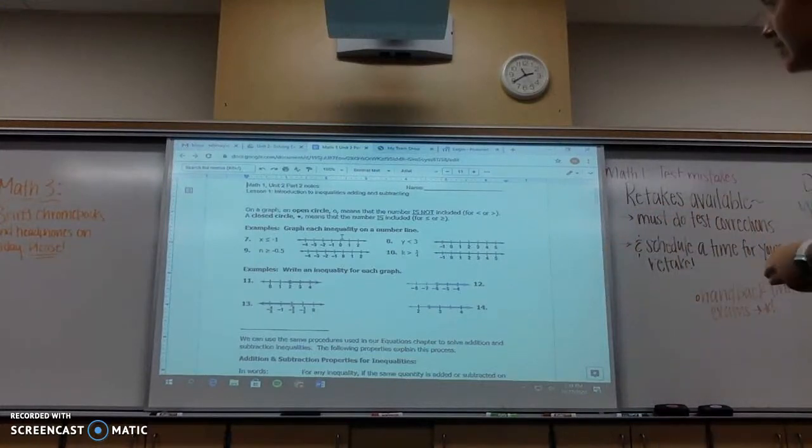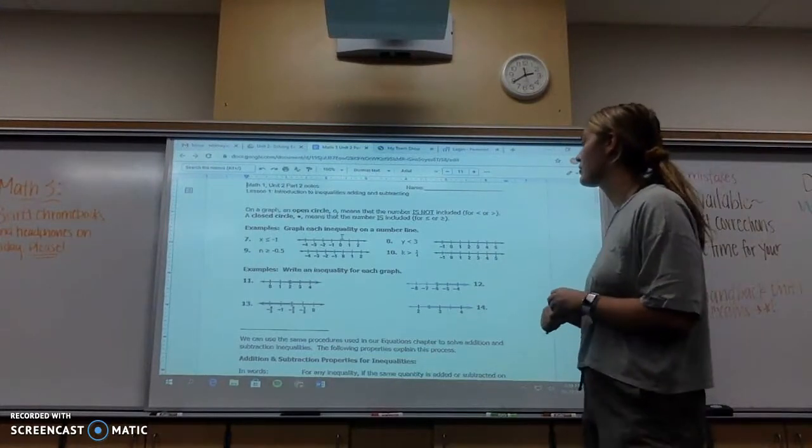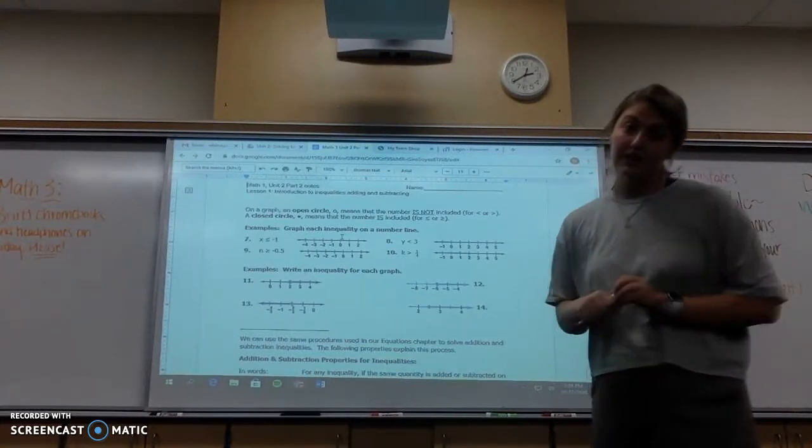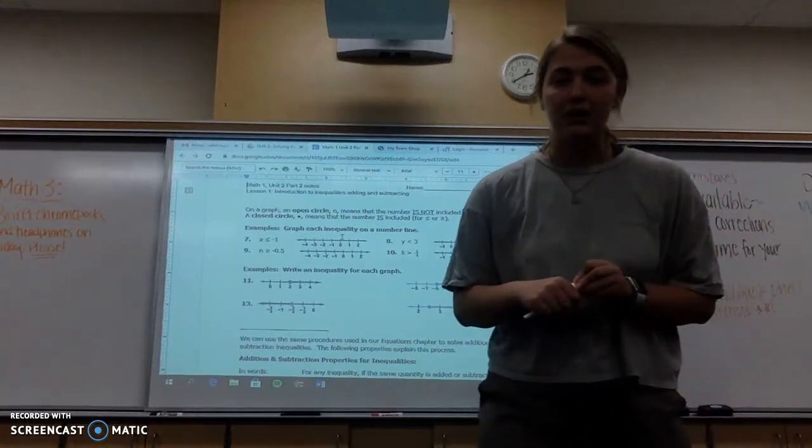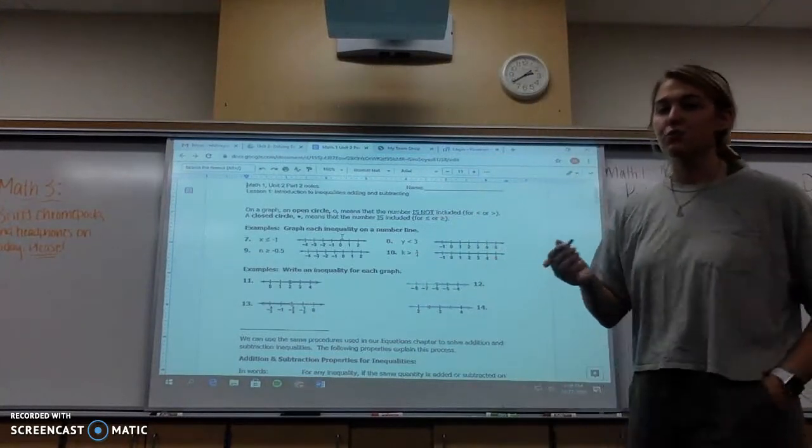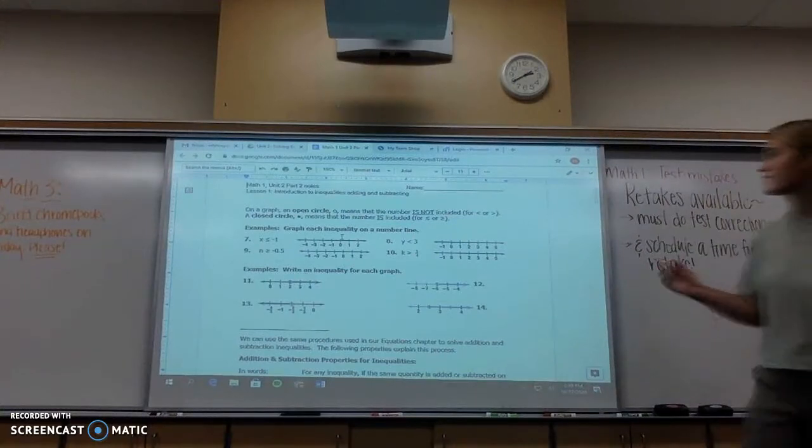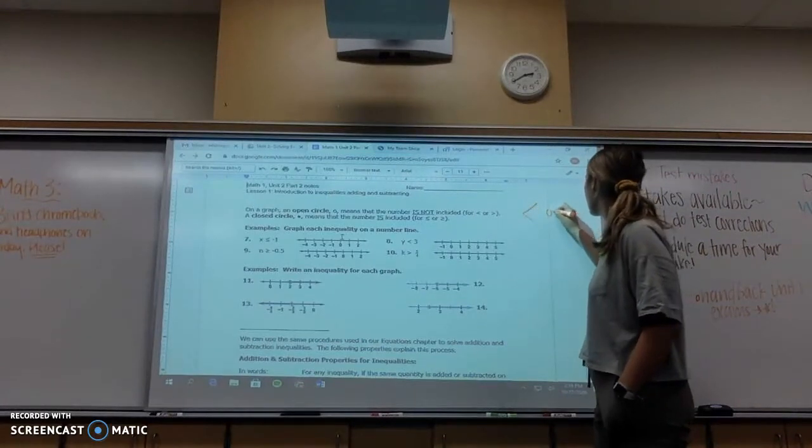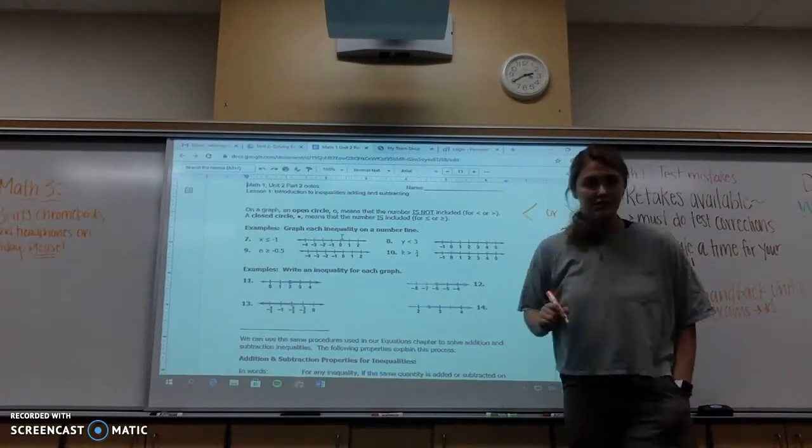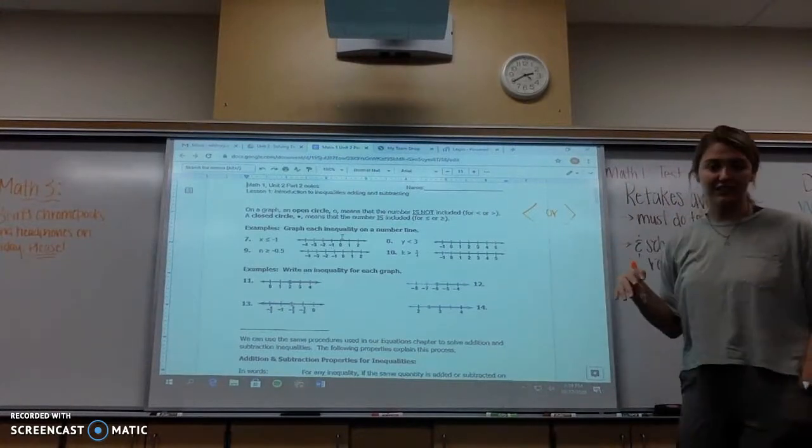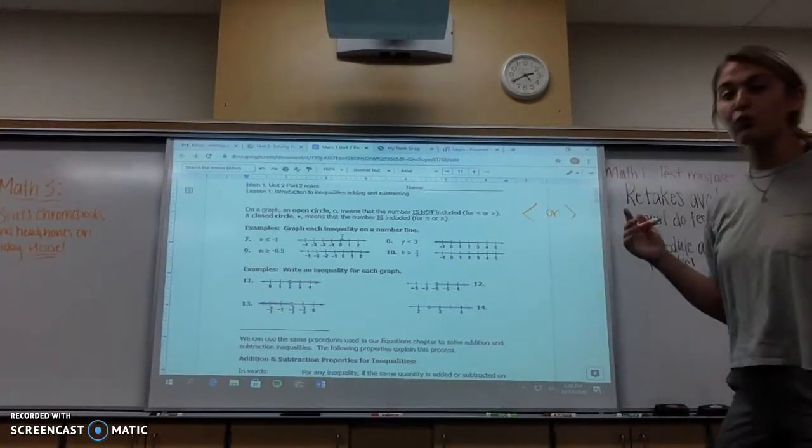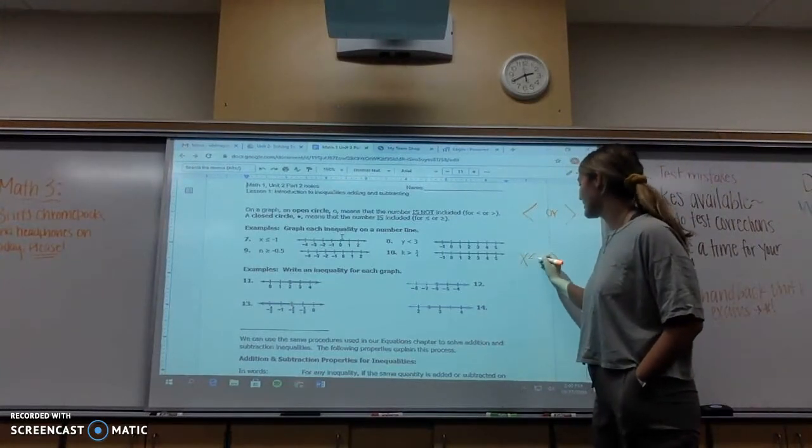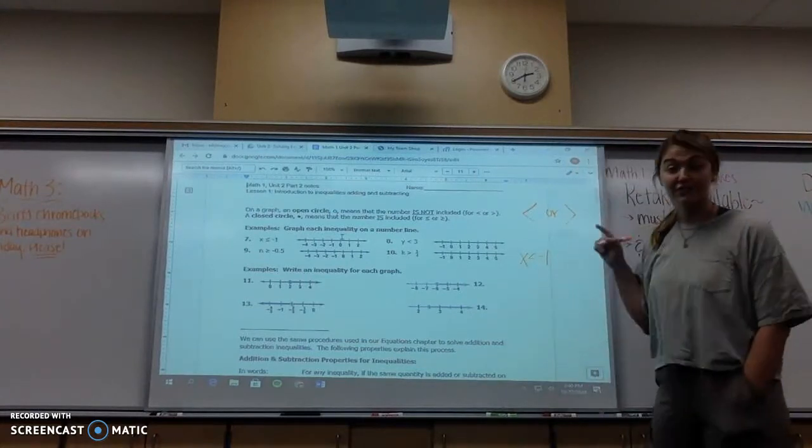On a graph, an open circle means the number is not included, and a closed circle means the number is included. A couple of things that I want to go over before we talk about that kind of stuff is what inequalities are. So for example, you've probably seen this for your entire life. These are less than and greater than signs. The way we read this, for example, we have x is less than negative 1. We read it left to right. The sign eats towards the bigger number.